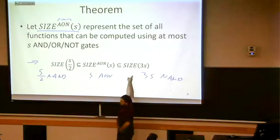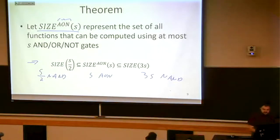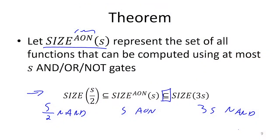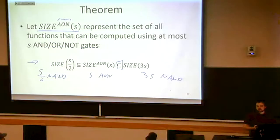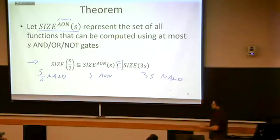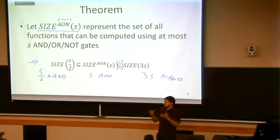Let's do the right-hand pair to start with. So how do I know that this inequality is going to hold? How do I know that anything I can do in S AND or NOT gates, I can definitely do in three times S NAND gates? So we mentioned that we could take NAND gates and build ANDs, ORs, and NOTs out of those NAND gates. And when we looked at that construction, the most expensive of those required three gates.